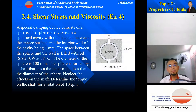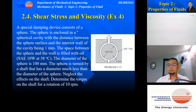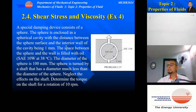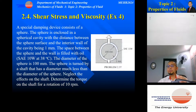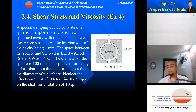The next example will be slightly more complicated. We have a special damping device which consists of a sphere enclosed in a spherical cavity, with the distance between the sphere surface and the interior wall of the cavity being 1 mm. The space between the sphere and the wall is filled with oil — SAE10W at 38 degrees C. From the chart we can get the viscosity at 38 degrees C.